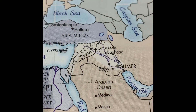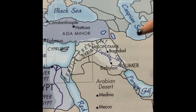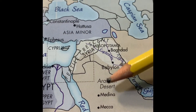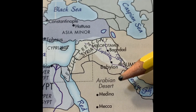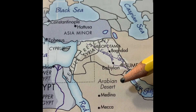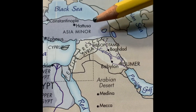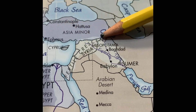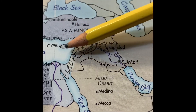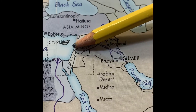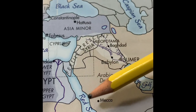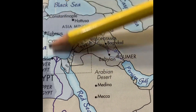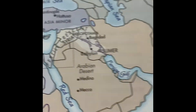Hittite Empire, to the tune of Father Abraham, starting with: Arabian Desert, Hattusa, Asia Minor, and Cyprus. Do you want to know about the Hittite Empire?